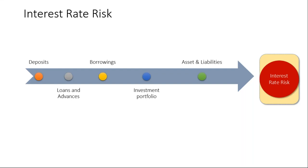Another type of interest rate risk is reinvestment or repricing risk. For example, bonds pay coupons semi-annually that need to be reinvested. If interest rates go up, coupons can be reinvested at a higher rate; if rates go down, reinvestment happens at a lower rate. All assets and liabilities — deposits, loans, borrowings, investments — are subject to interest rate risk.